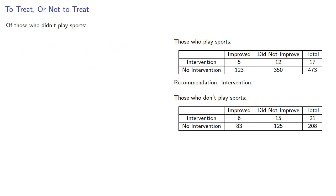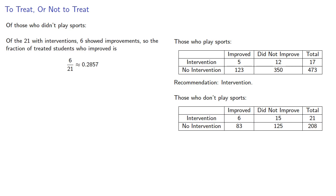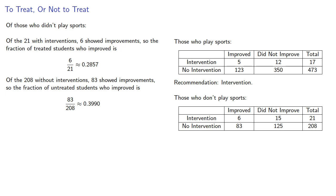Of those who didn't play sports, of the 21 with interventions, 6 showed improvements — about 29%. Of the 208 without interventions, 83 showed improvements — almost 40%. So those without interventions did better, and we'd recommend no interventions.